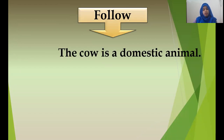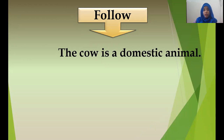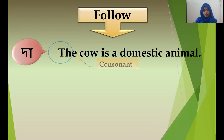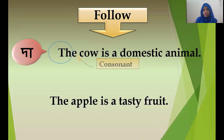For example: 'The cow is a domestic animal.' The word 'cow' starts with 'c,' which is a consonant, so we pronounce it 'thuh cow.' Second example: 'The apple is a tasty fruit.' The starting letter of 'apple' is 'a,' which is a vowel, so we pronounce it 'thee apple.'